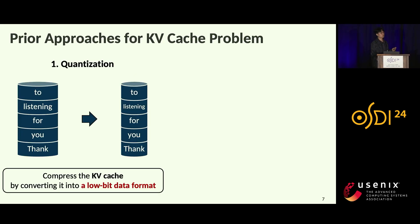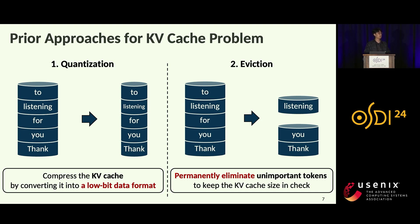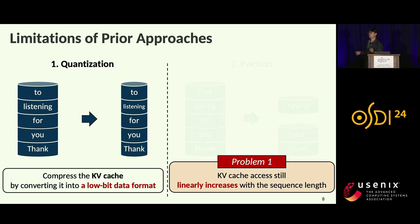There were several approaches to reduce key-value cache size. The first is quantization, which compresses the KV cache by converting each element into a low-bit data format. Another approach is eviction-based, which reduces the number of key-value tokens by analyzing token importance and permanently eliminating less important tokens. However, both approaches have significant limitations. Quantization is not a fundamental solution since KV cache access still linearly grows with sequence length.